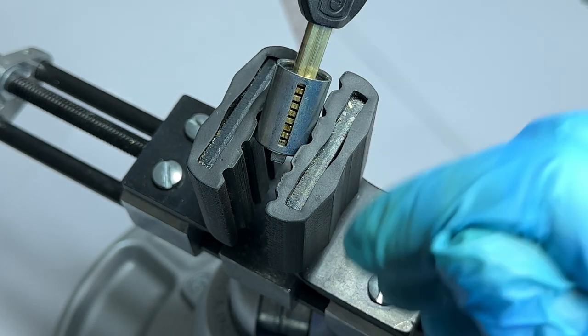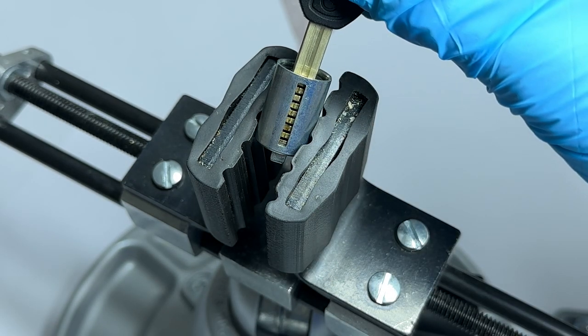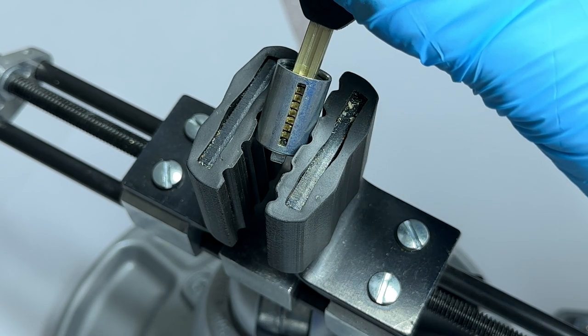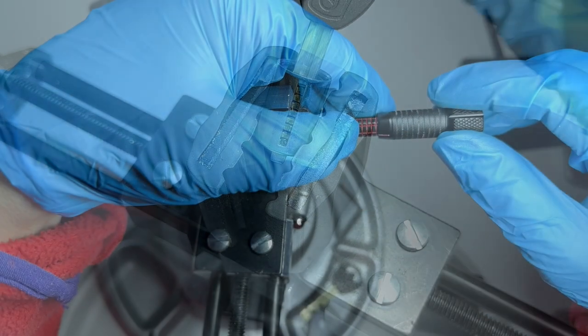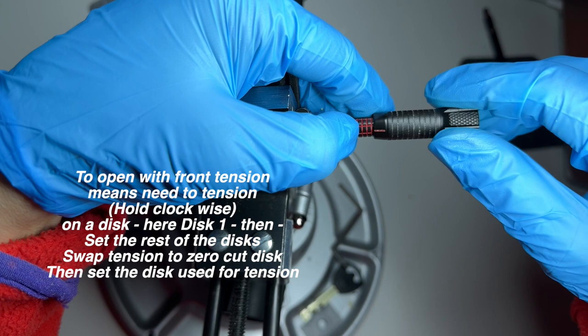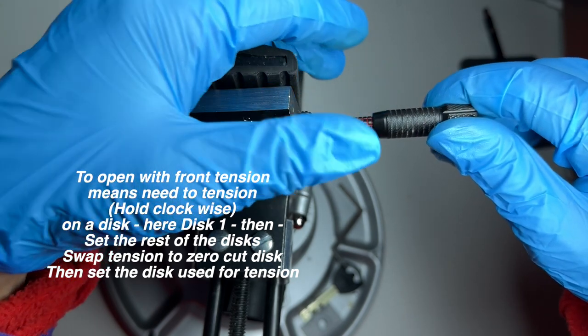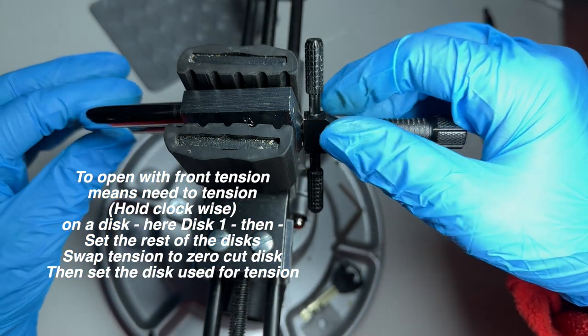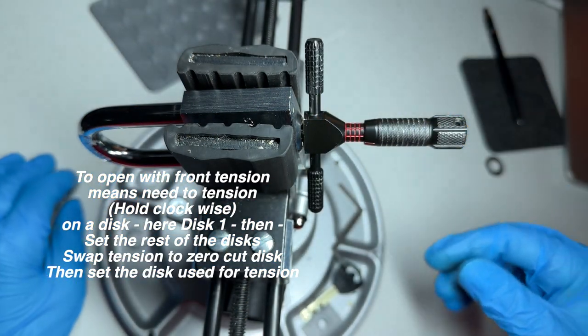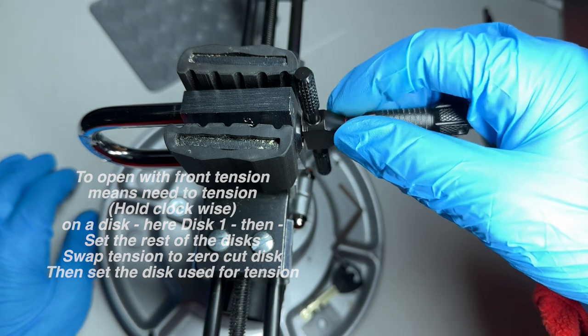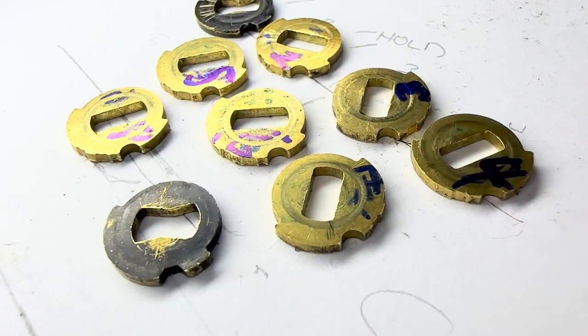Again, so far, so familiar if you've been checking out disk detainer locks. So to open this one with front tension, what you're going to be doing is tension off that front butterfly disk. That's our strategy here. And then swap to tension off one of the zero-cut disks and open up.